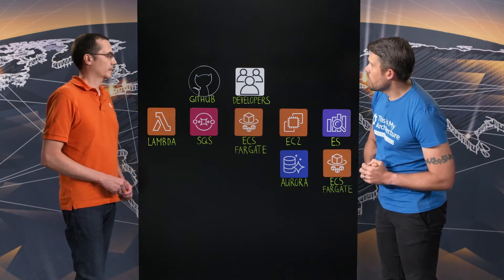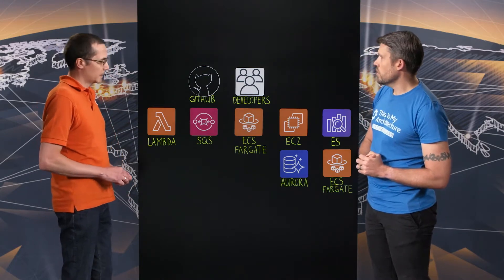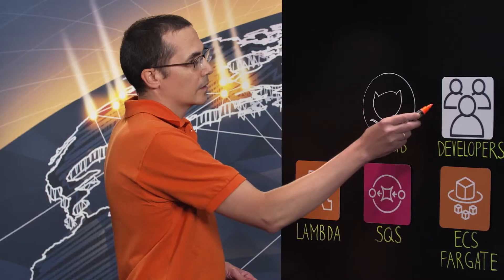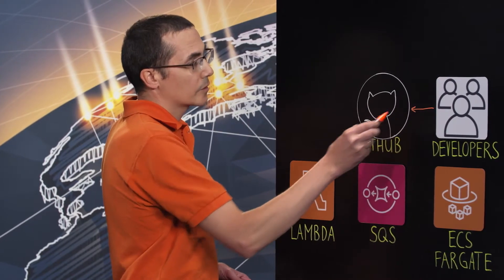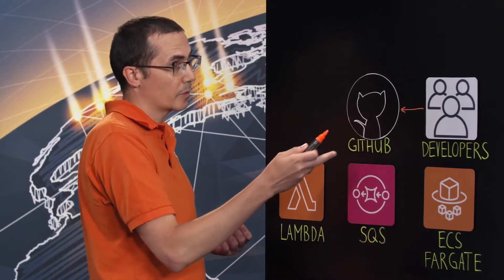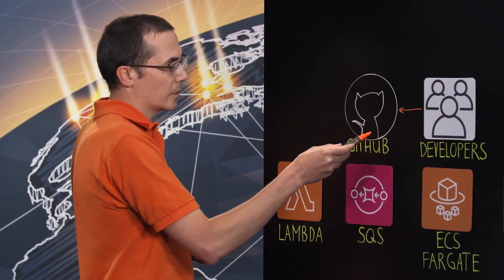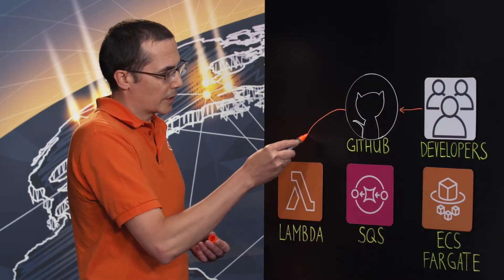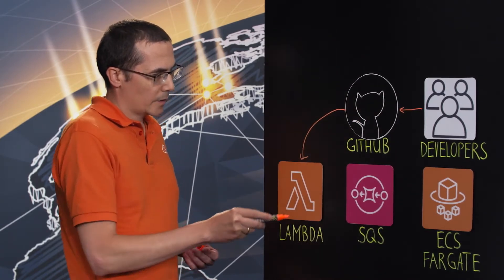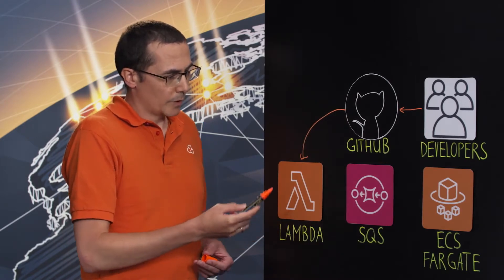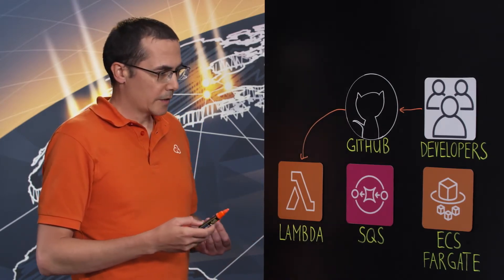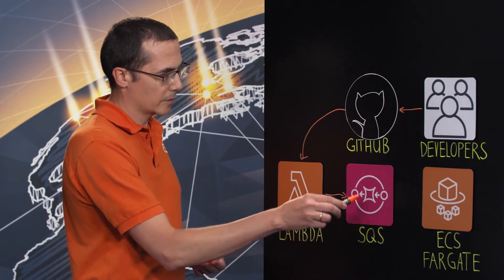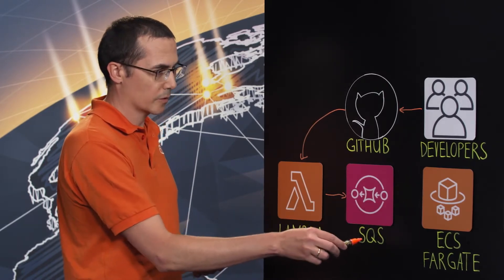Can you take us from the starting point of what we see on the board here? The starting point is developers. Developers write code and they push code into a GitHub repo most of the time. So when a code change is pushed into this repo, it triggers an event and we capture this event into this Lambda. We do some triage, we do some analysis, and then we create an analysis request. It goes straight into this queue, an SQS queue.